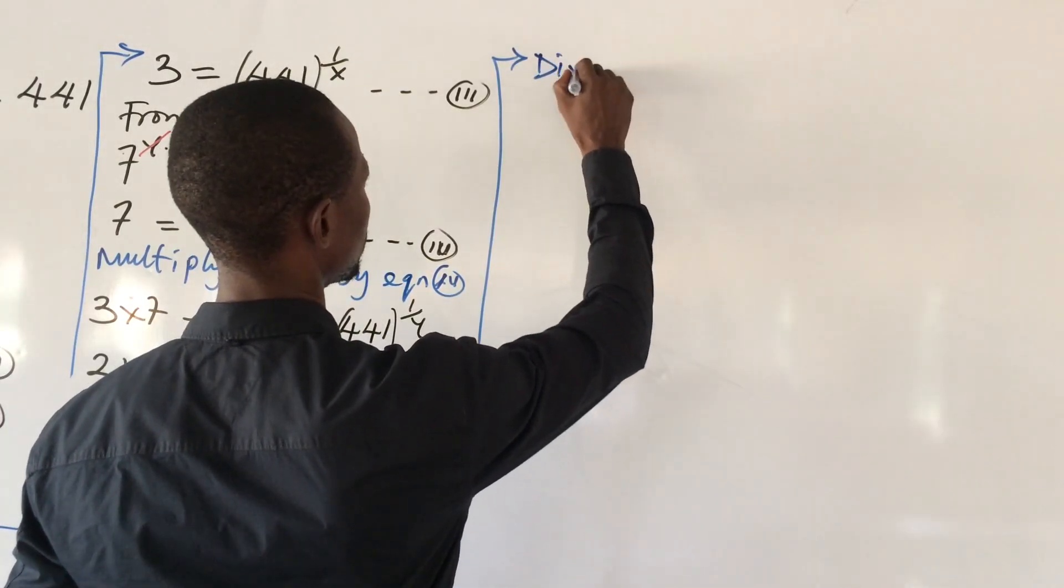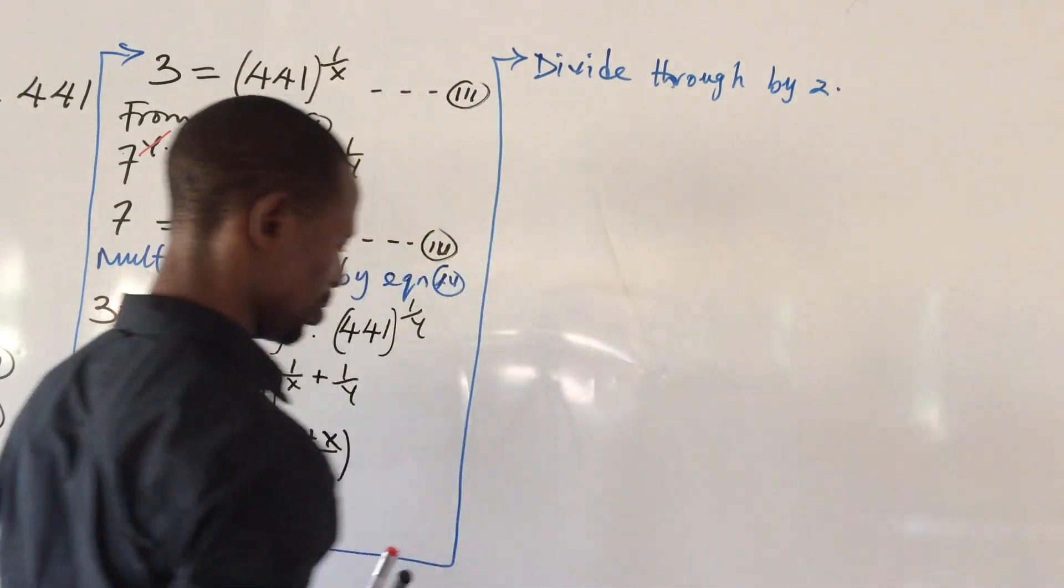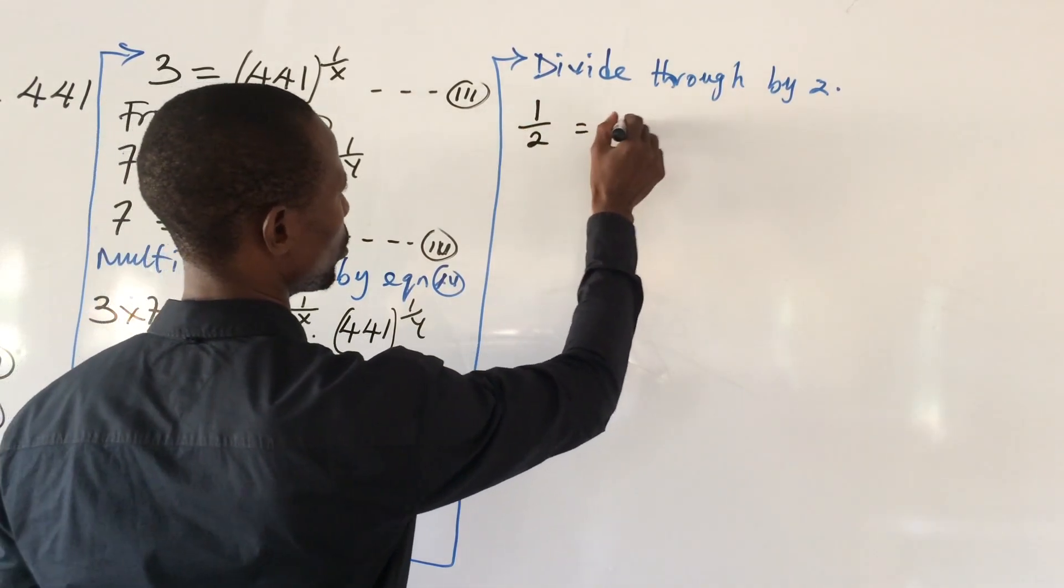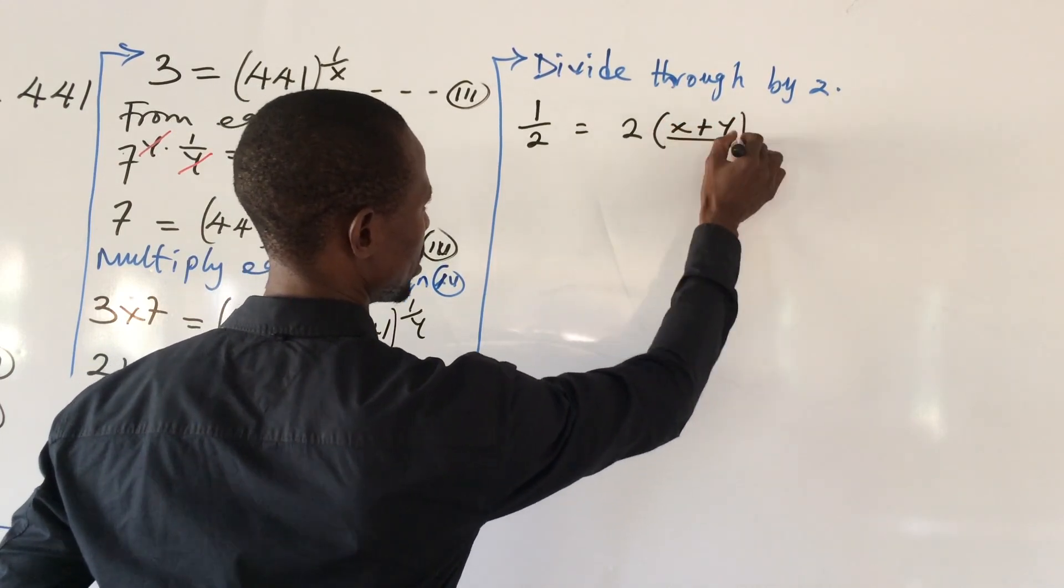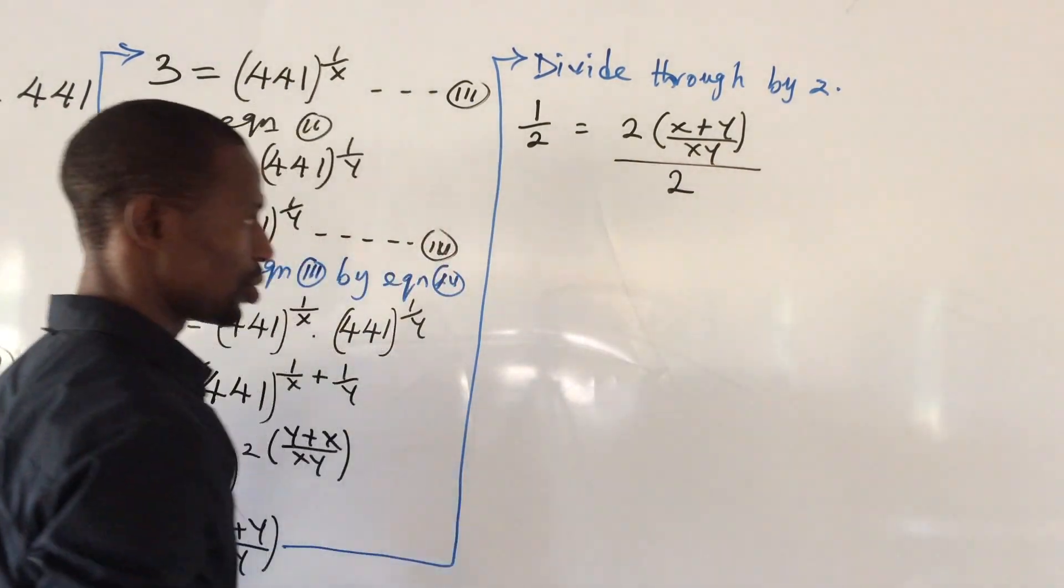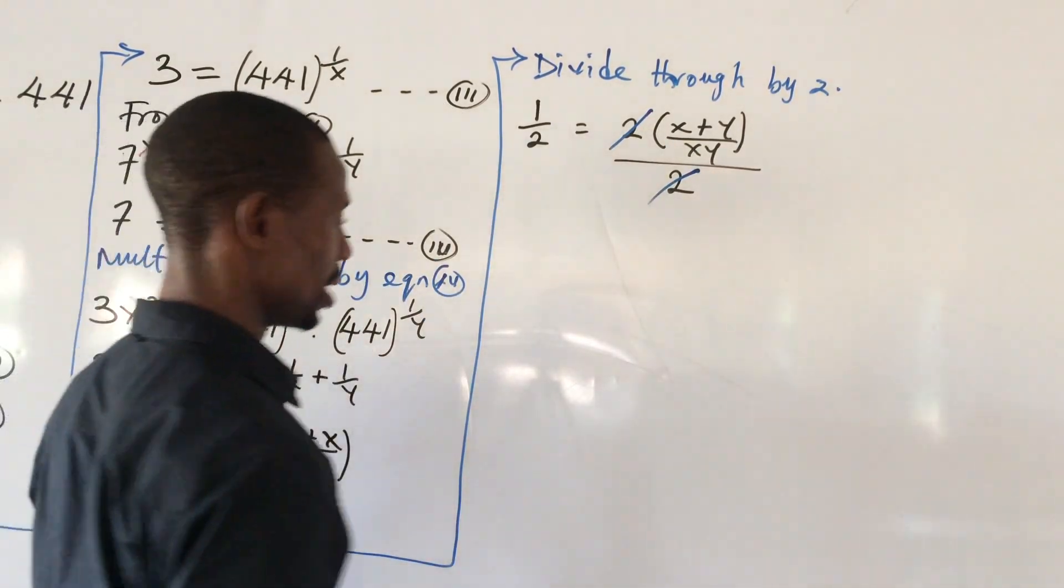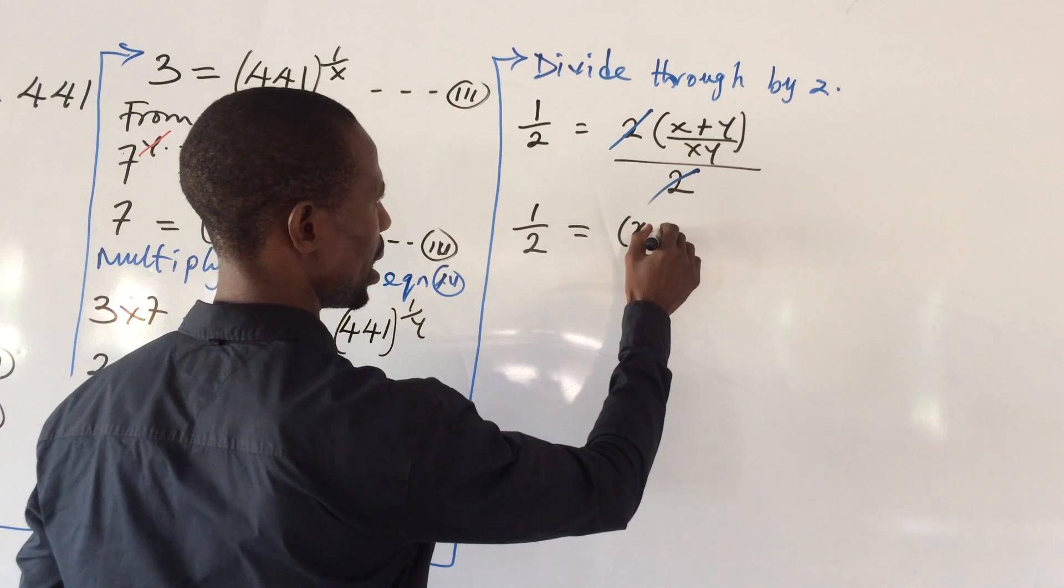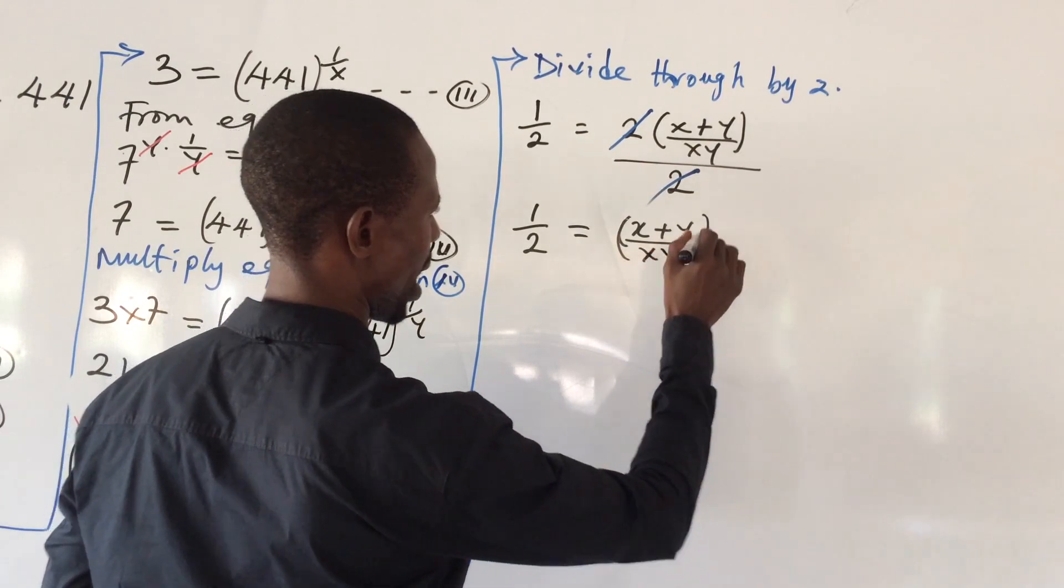Divide through by 2. If we do that, the expression will give us 1 all over 2 equal to bracket your x plus y, close bracket, all over xy all over 2. So the 2 on the left-hand side, the numerator and denominator will take care of themselves. So we are now left with 1 all over 2 equal to bracket x plus y, close bracket, all over xy.